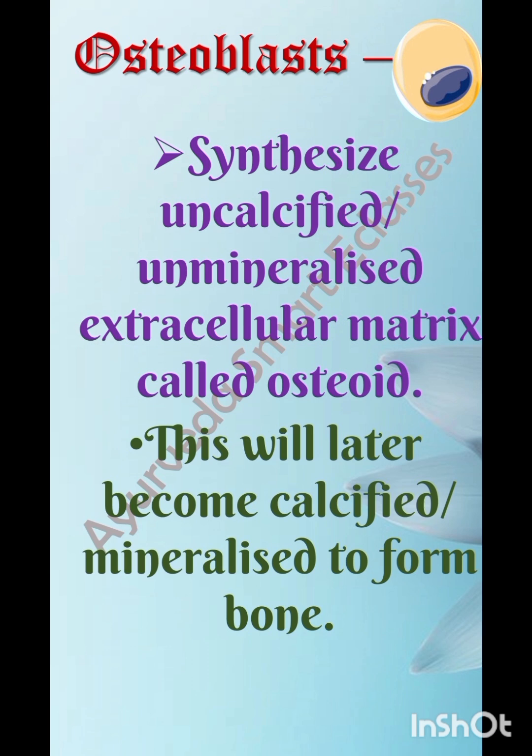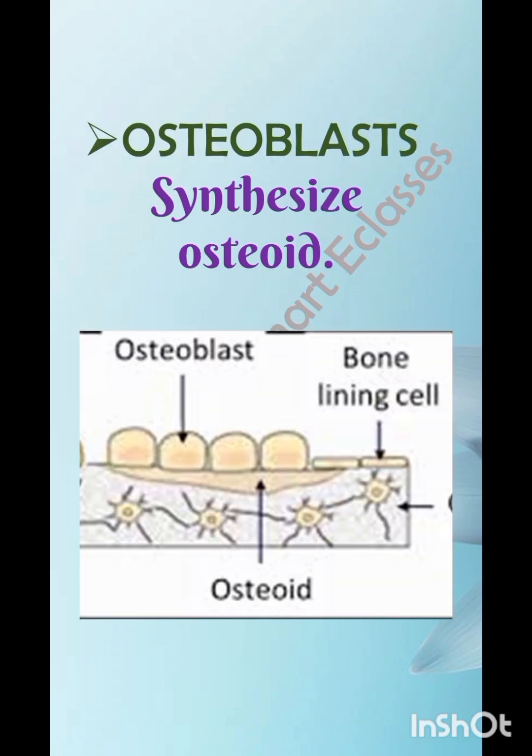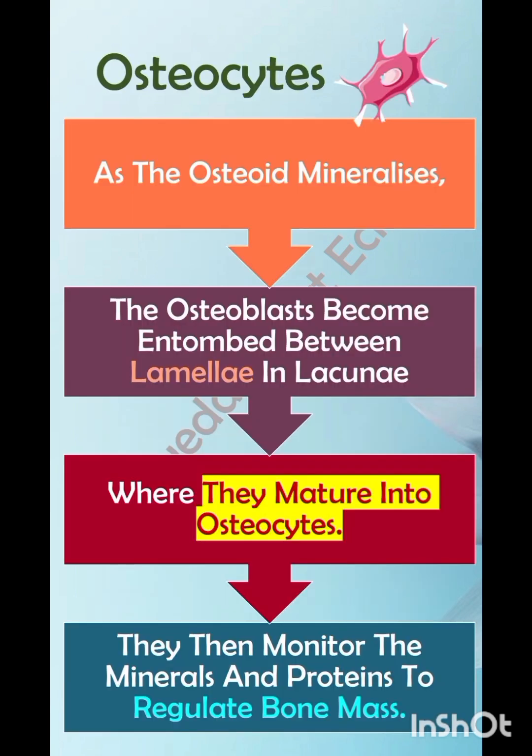Osteoblasts synthesize the uncalcified, unmineralized extracellular matrix called osteoid, which later becomes calcified and mineralized to form bone. The image shows osteoblasts synthesizing the osteoid of the extracellular matrix.